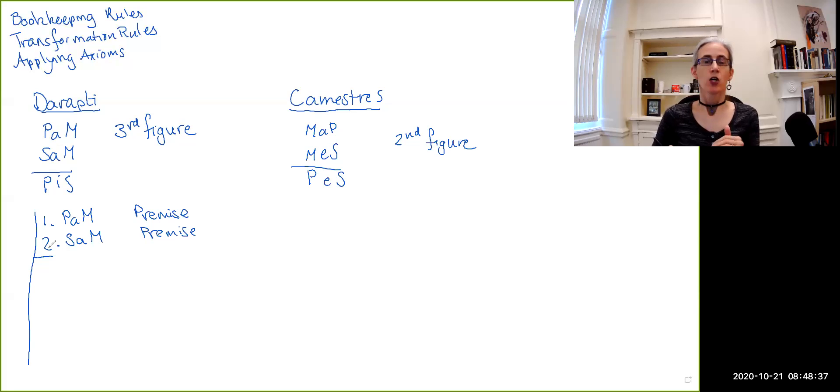So what we want to derive in the case of Dorati is the categorical proposition PiS. So we need some way of getting a proposition that has both P and S in it, and it has to have the i copula. The first step that I'm going to do—and this is just kind of for bookkeeping purposes, this is why it's called the bookkeeping rule—I'm going to reiterate the first premise so that we have it here.